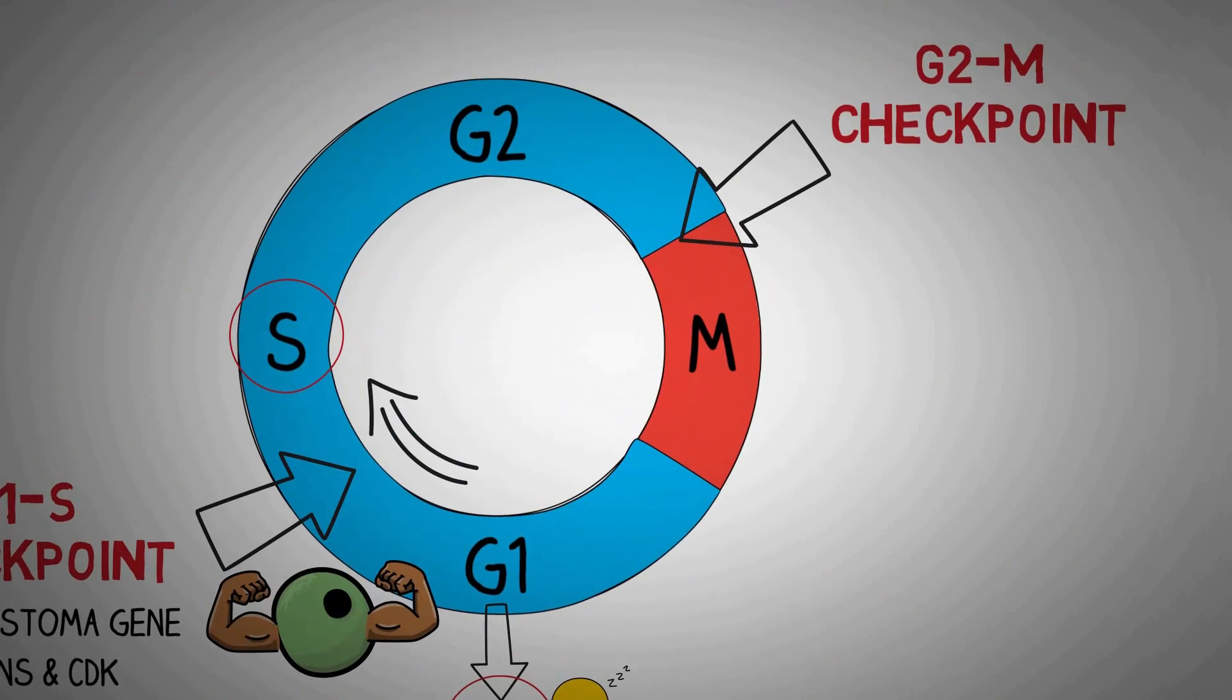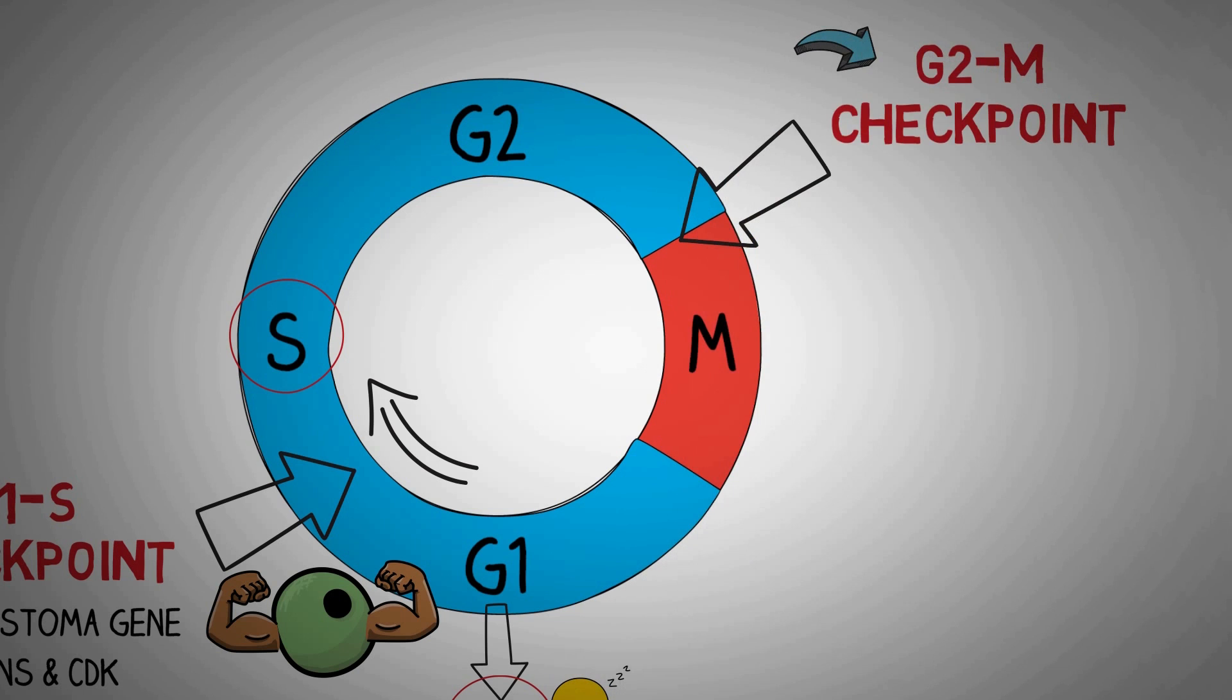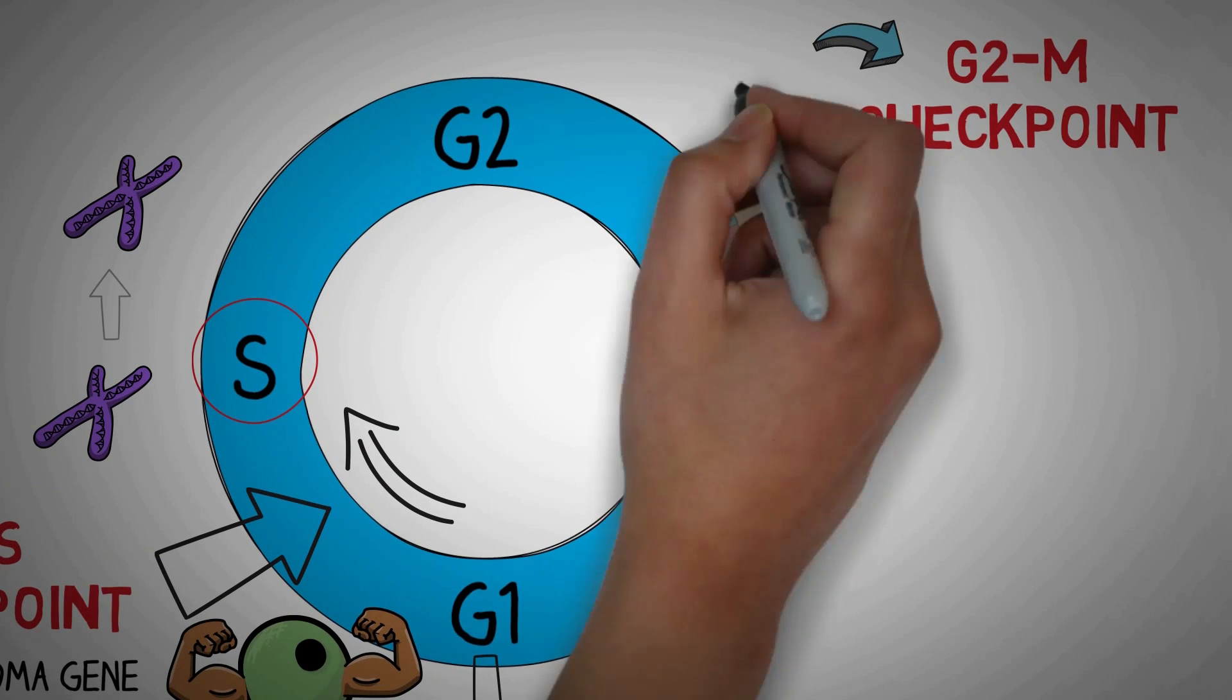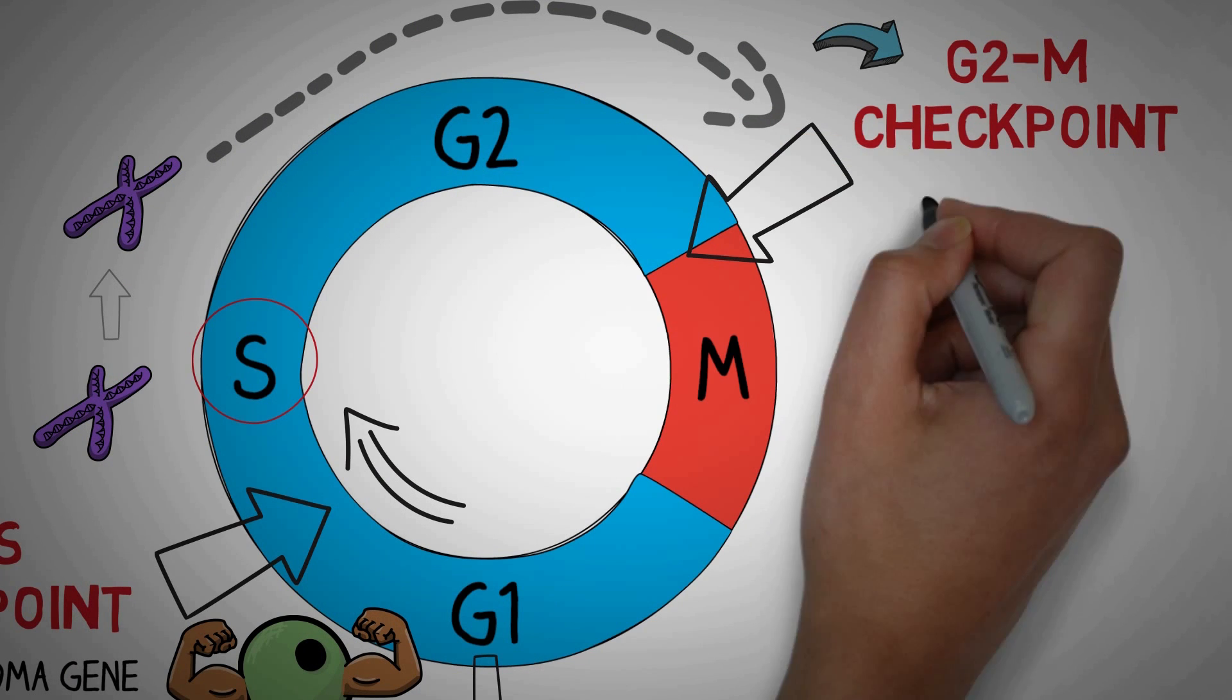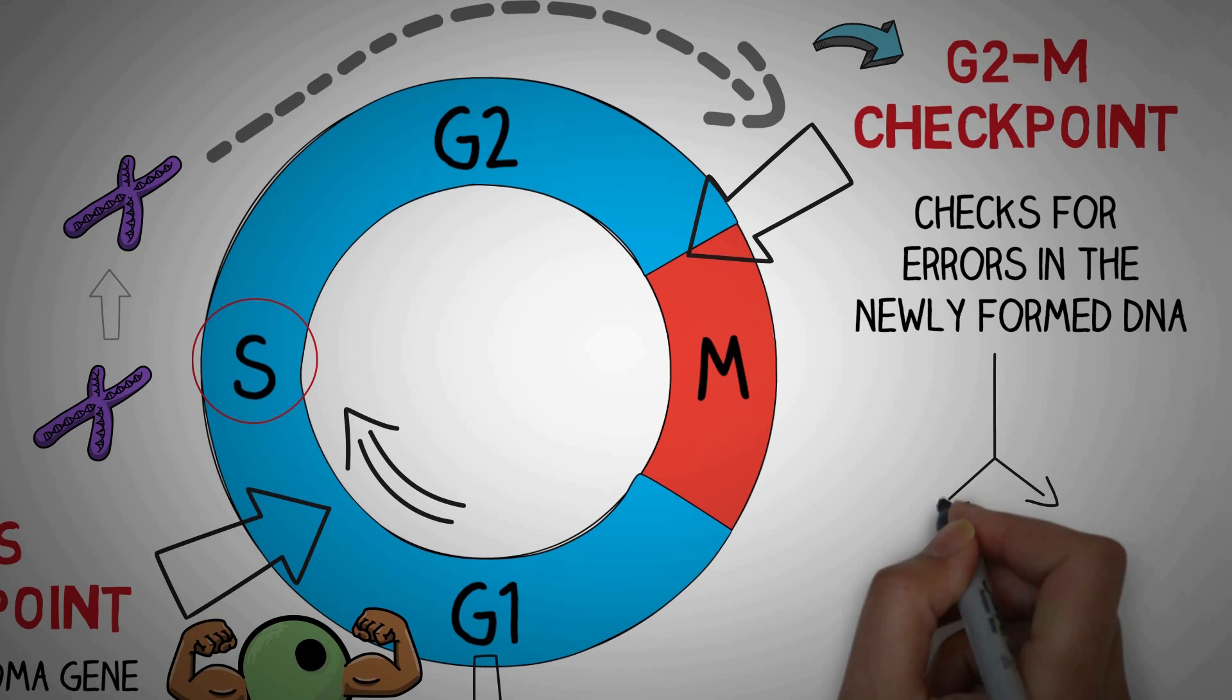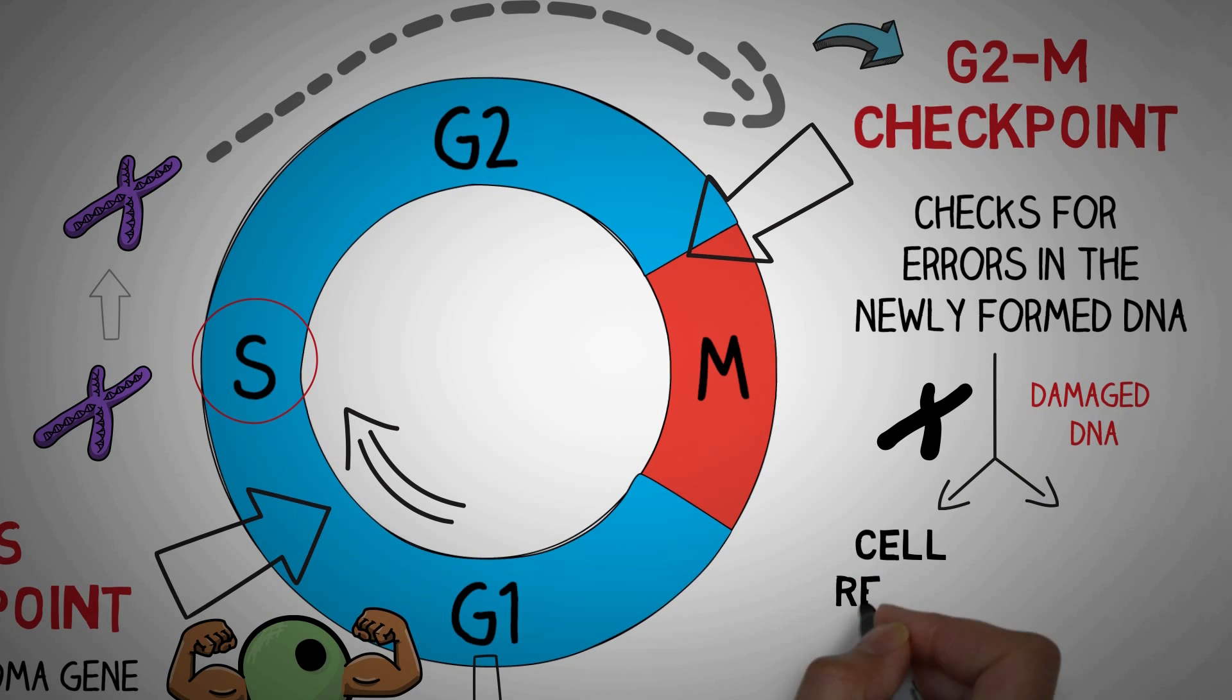The next checkpoint is after the G2 phase known as the G2M checkpoint. As the S phase is associated with duplication of the DNA and formation of a whole new set of chromosomes it is important to check for any errors in the newly formed DNA which is done at the G2M checkpoint. If the damaged DNA is found it undergoes repair or the cell undergoes automated cell death known as apoptosis if it is not able to repair the DNA in time.